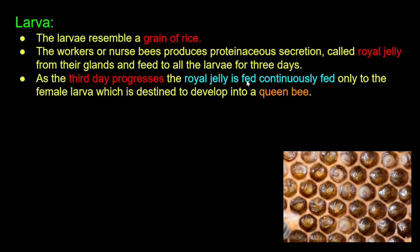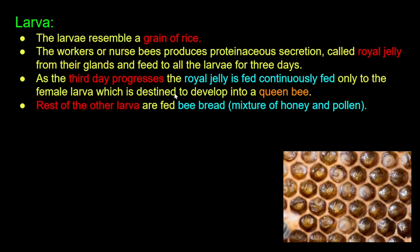Royal jelly is fed continuously only to the female larva which is destined to develop into a queen bee. The rest of the larvae are fed bee bread, a mixture of honey and pollen.